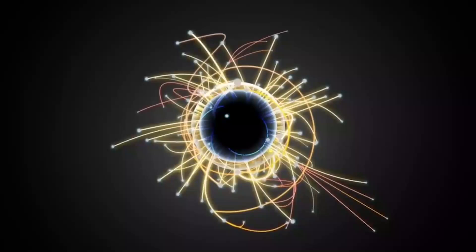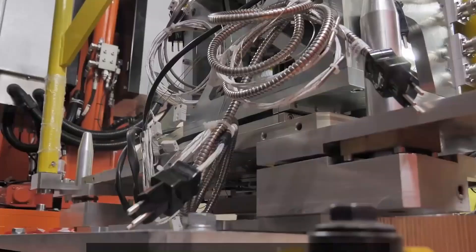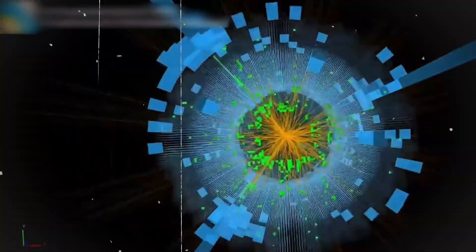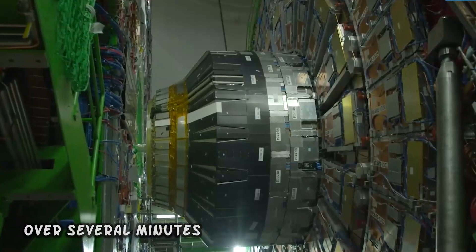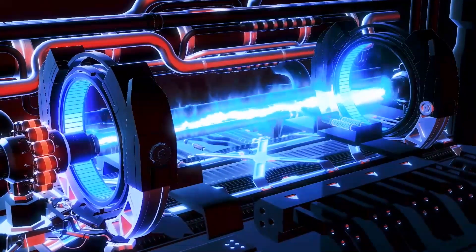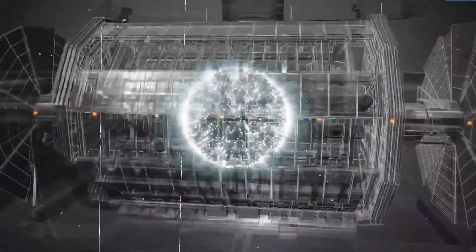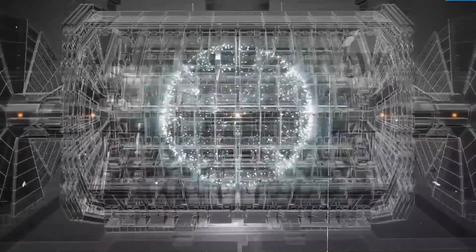Finally, the super proton synchrotron (SPS) is used to increase their energy further to 450 gigaelectron volts before they are at last injected, over several minutes, into the main ring. Here, the proton bunches are accumulated, accelerated over 20 minutes to their peak energy, and finally circulated for 5 to 24 hours while collisions occur at the four intersection points.